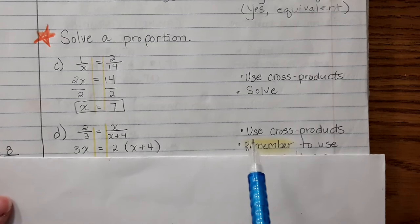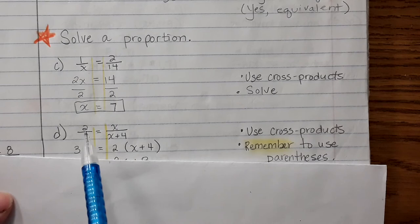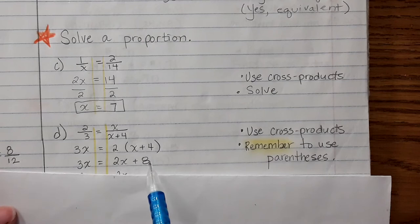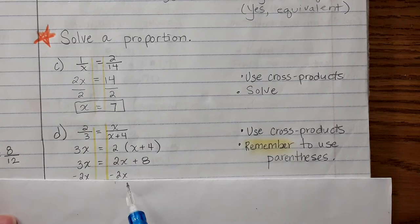3 times x is 3x. However, this is 2 times this whole entire sum of x and 4. You need to remember to use parentheses because then you have to distribute. Now we can solve this equation, getting the variable on one side by eliminating the 2x, and we get x equals 8.